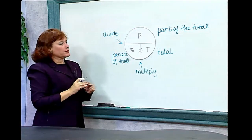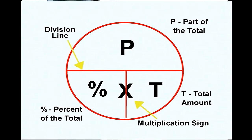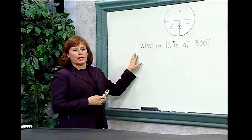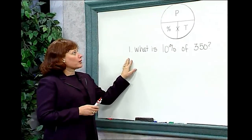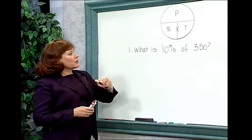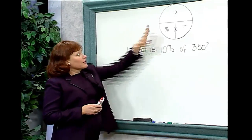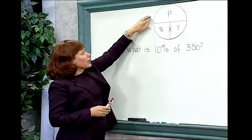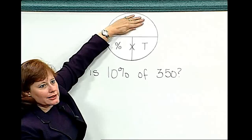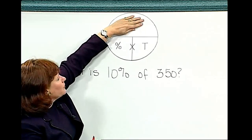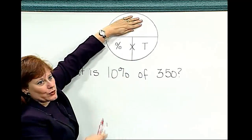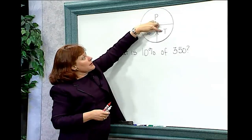When doing problems, we're going to try and keep all five regions of the percent circle in mind. The problem on the board says: what is ten percent of three hundred fifty? The thing we're looking for in this problem is the part, and I know that because I have the percent and I have the total. So I'll cover the part with my hand and look at the remainder of the problem — it says take the percent times the total.